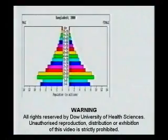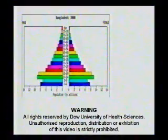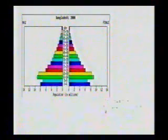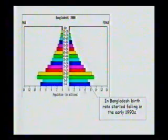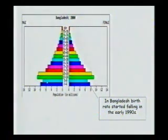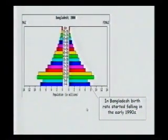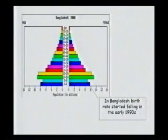This is an age-sex pyramid from Bangladesh. Interestingly, Bangladesh's fertility or birth rate started declining in the 1990s. This pyramid comes from the year 2000, and you can see that fewer children were being added after the 1990s, with fewer and fewer children being added over time.